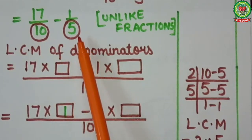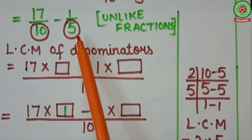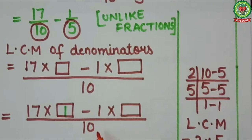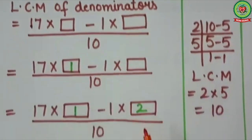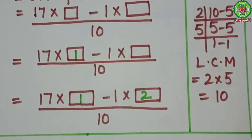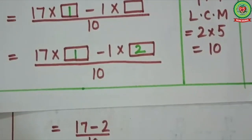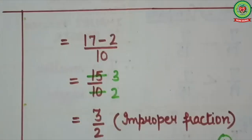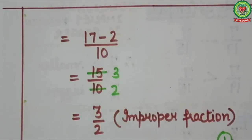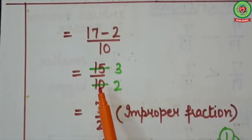Now see the second fraction. Here denominator is 5. In table of 5, 10 will come at 2. So we will write 2 in the second bracket. First multiply, then subtract. 17 ones are 17, and 2 ones are 2. Now 17 minus 2 equals 15. Here it will come 15 upon 10.